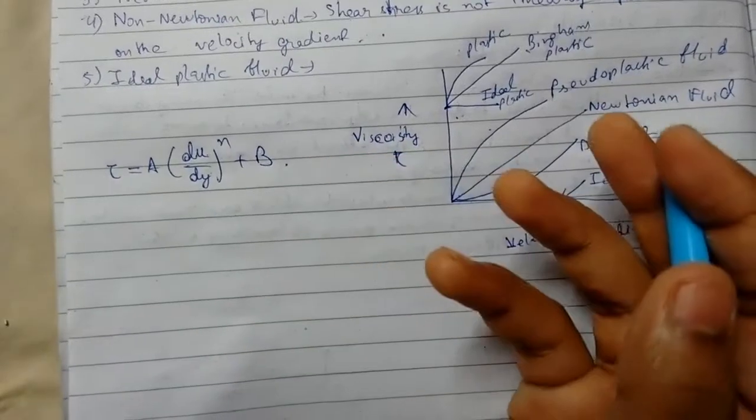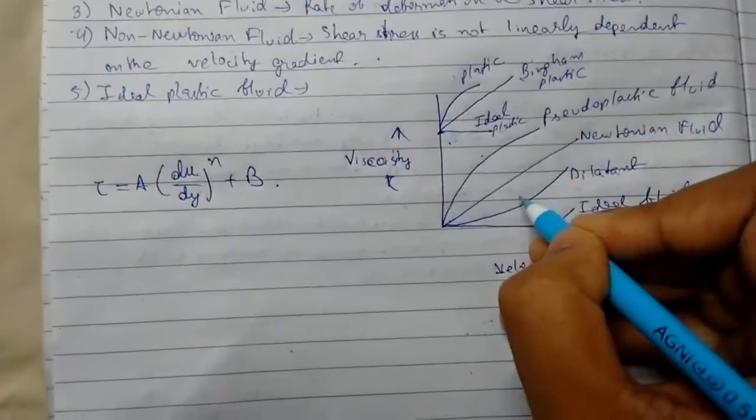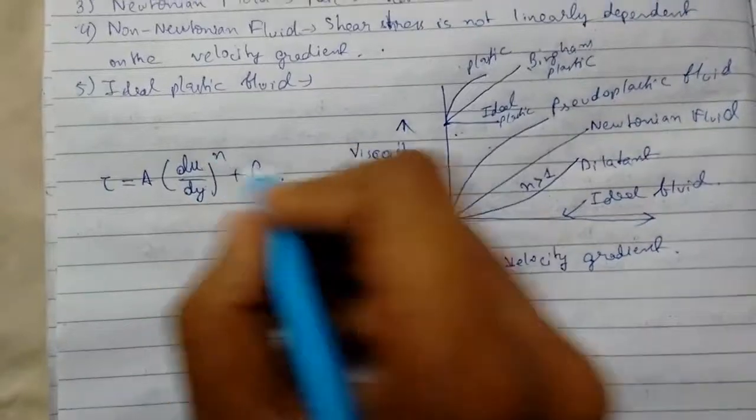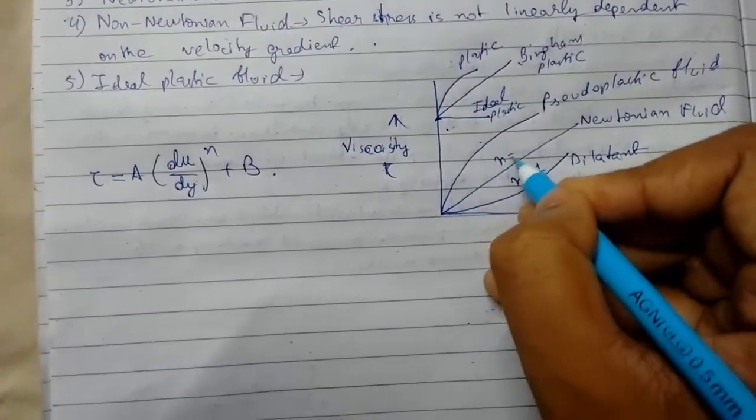Like shear stress and dilatant. Dilatant, printer, zinc butter, where dilatant for n is greater than one.